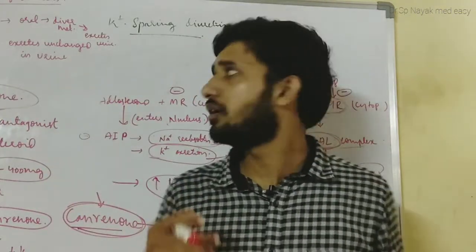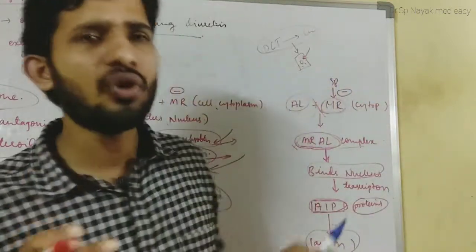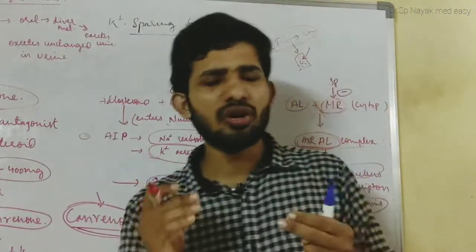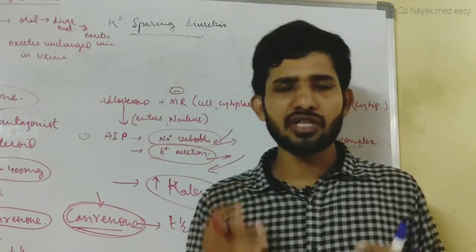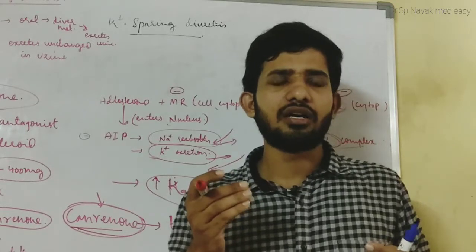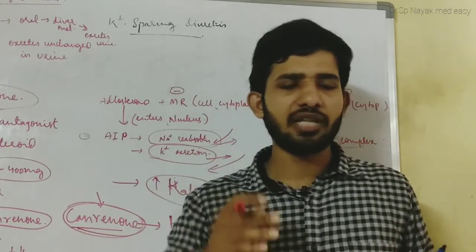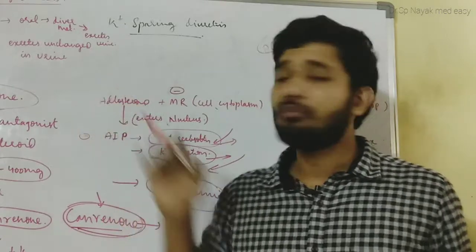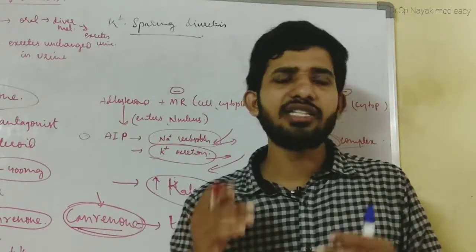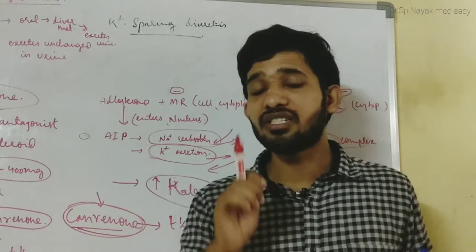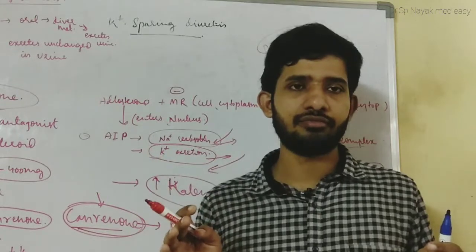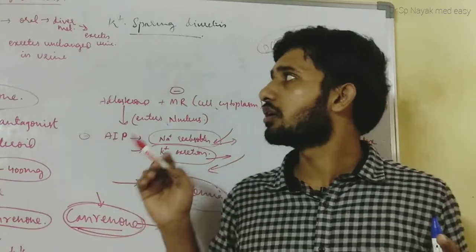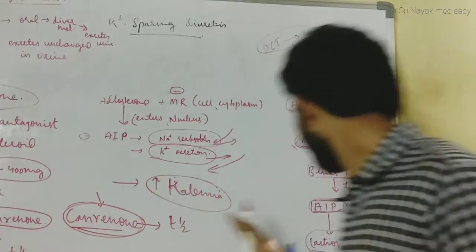In potassium-sparing diuretics we also have triamterene and amiloride. Both are low-efficacy drugs and are available in oral form. Triamterene is metabolized in the liver and excreted from the kidneys. Amiloride is not metabolized and is directly excreted in unchanged form.